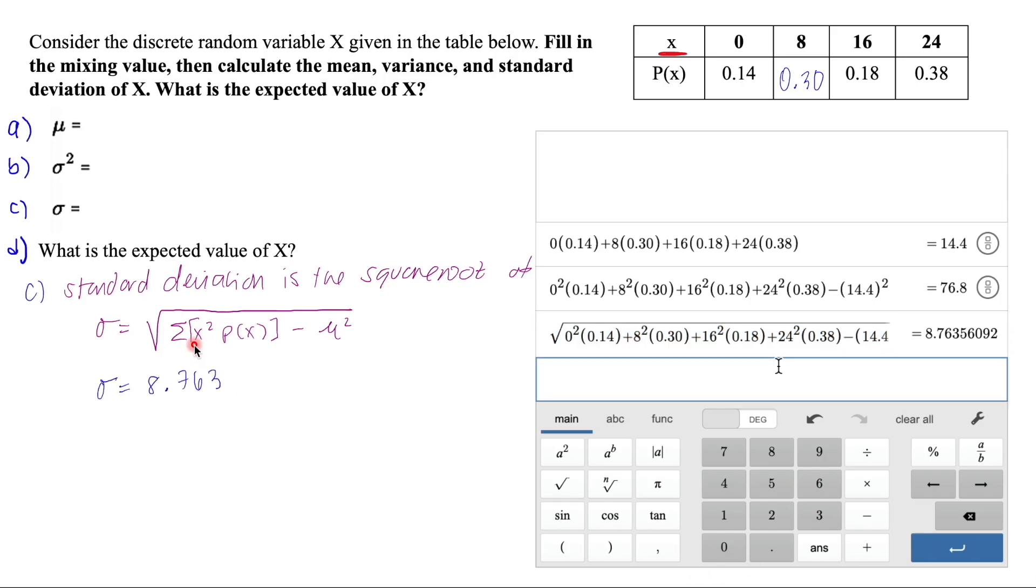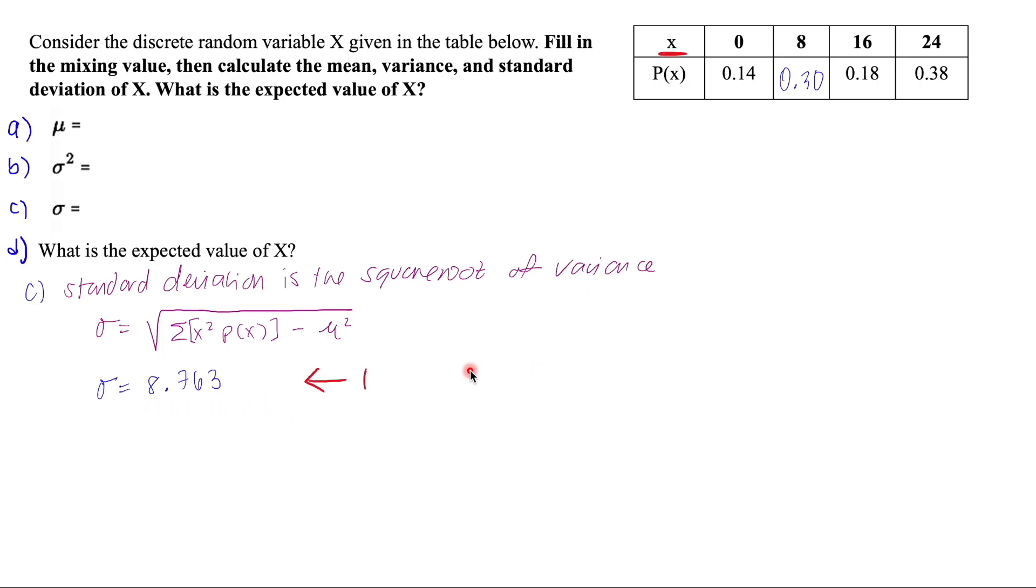All right. And then writing it on our paper, we get 8.763. So talking about our rounding rules, we want to make sure that we round one more than that random variable x right there. So if we have whole numbers here, then that means that one more decimal would be just one decimal place here.